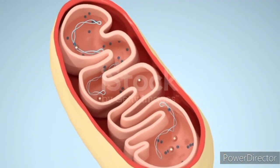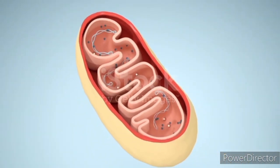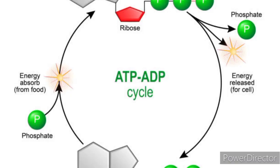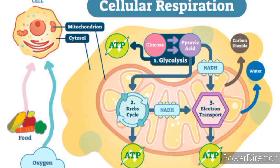ATP production. Through oxidative phosphorylation, mitochondria produce ATP by utilizing energy-rich molecules derived from food, such as glucose and fatty acids, in a series of biochemical reactions.